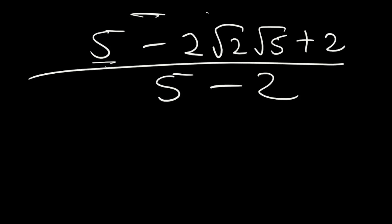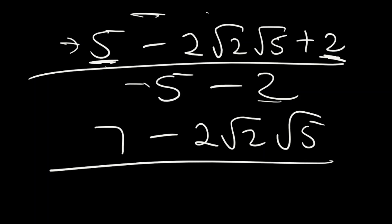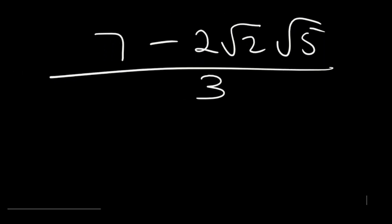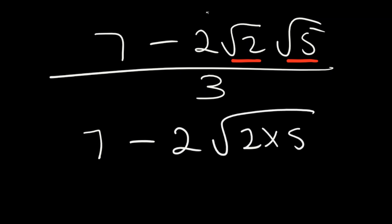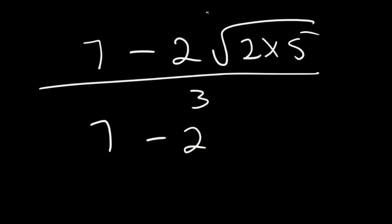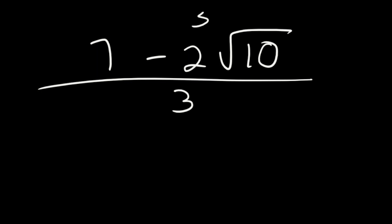Collecting like terms: five plus two gives seven, so the numerator is seven minus two root of two root of five. The denominator is five minus two, which is three. Since we have root of two and root of five in the numerator, multiply them together to get root of 10. The final answer is seven minus two root of 10, all over three.